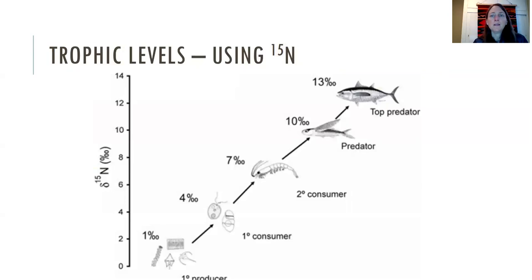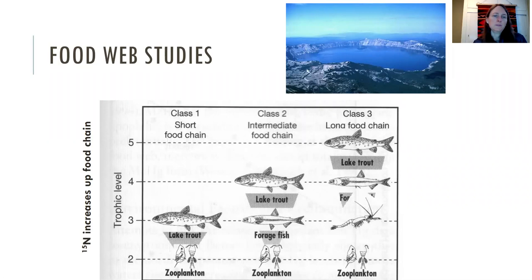And so here is kind of an example. You might have the algae at the bottom, and then you have the zooplankton and the tiny little invertebrates, and then the tiny little fish, and then the top fish, right? And they're all bumping up as you move in the trophic level.